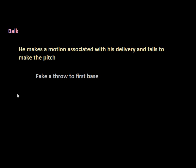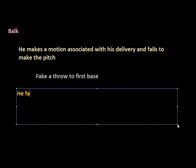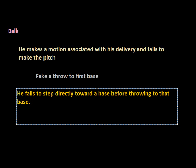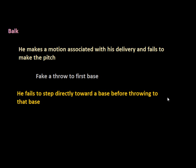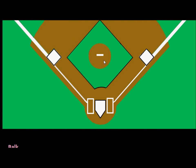The third way is that the pitcher, while on the rubber, fails to step directly toward a base before throwing to that base. This means he has to step before he throws the ball — he can't throw and then step, and he can't throw without stepping. For example, he can't step toward home plate and then throw the ball over to first base. That's exactly what a balk is referring to: deceiving the runner.